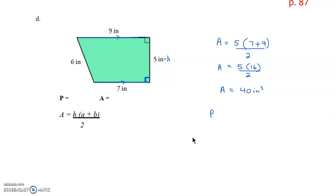For our perimeter, we're going to add all the sides. So we're going to take 7 plus 5, plus 9, plus 6. And that's going to equal 27. And this time, it's going to be inches. So our perimeter is 27 inches, and our area is 40 square inches.